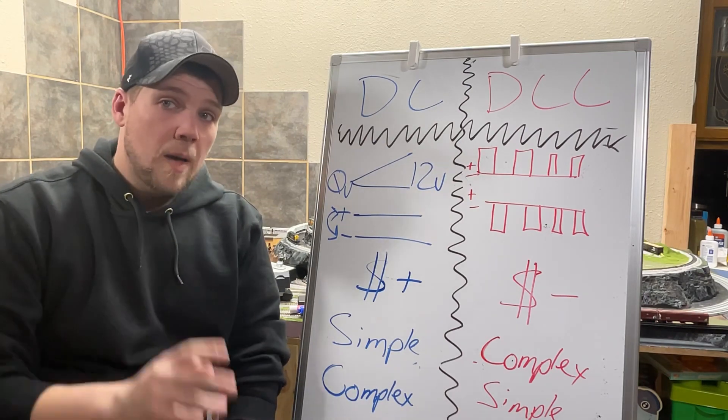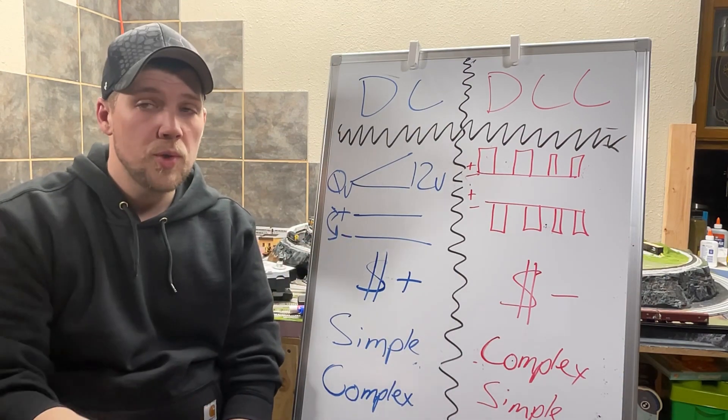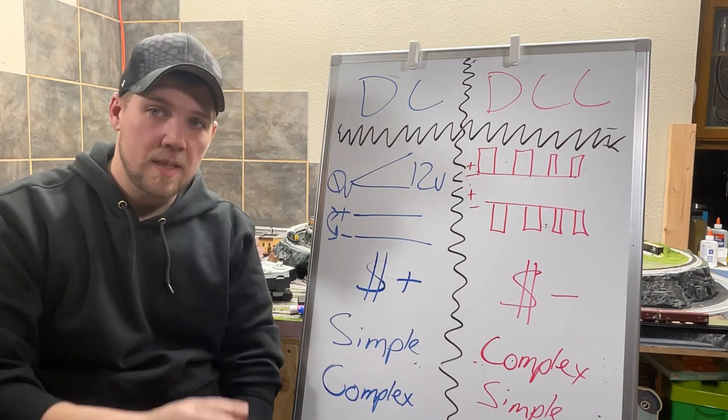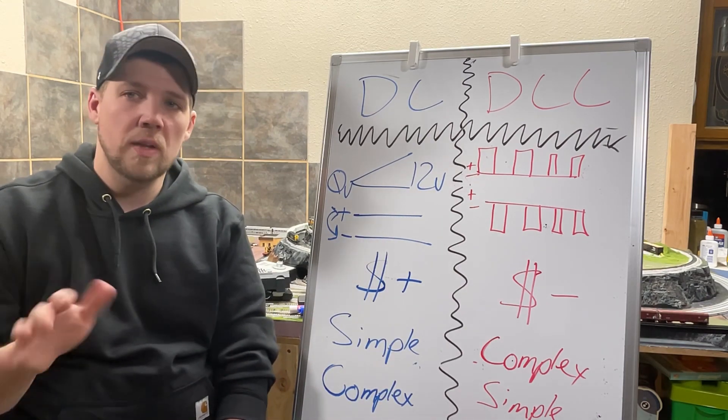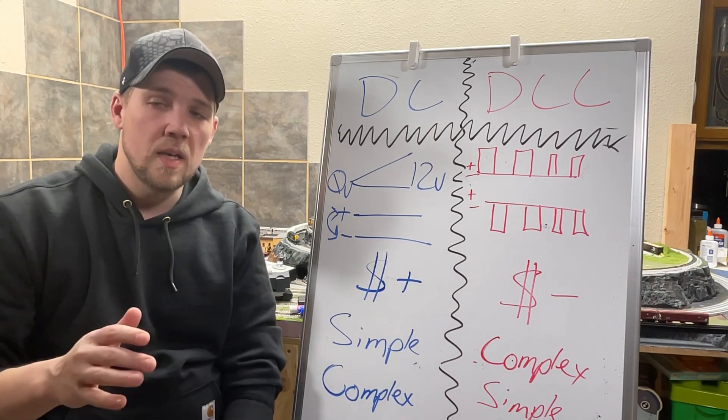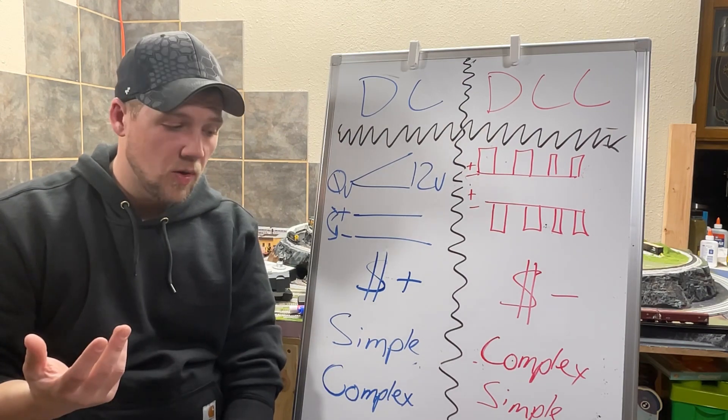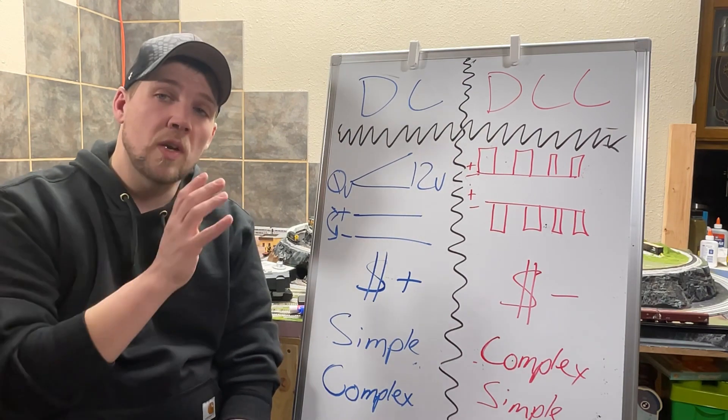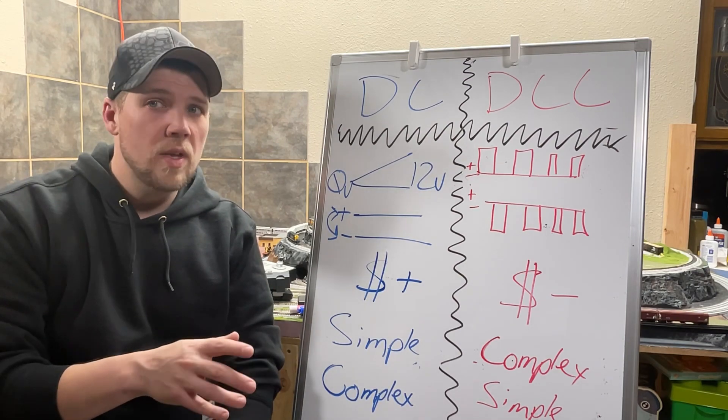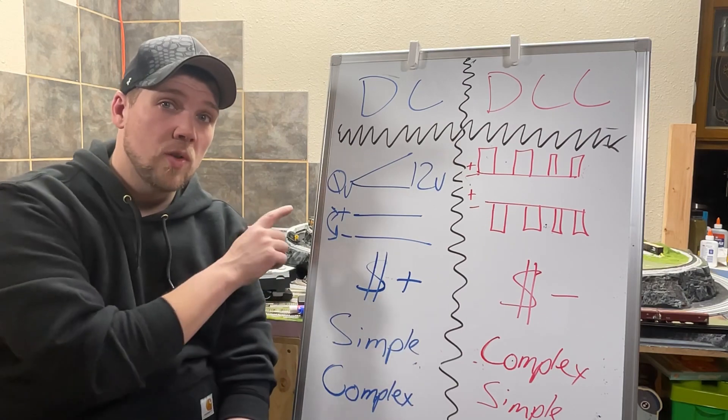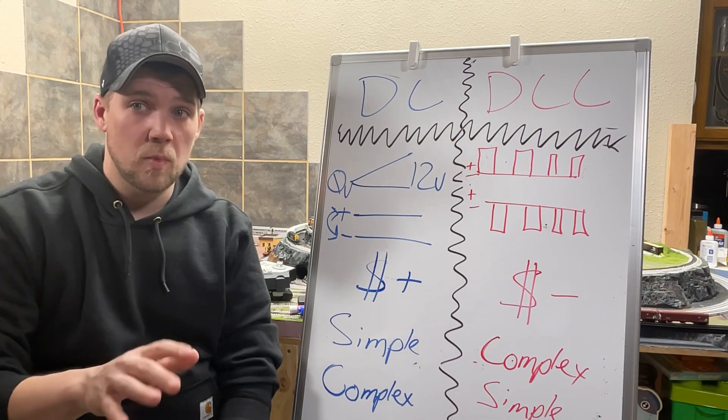There are currently three options available. There is DC, DCC, and there's also some Bluetooth stuff coming to market. We're going to bypass the Bluetooth stuff for today, mainly because it's relatively new, and I don't think the technology is quite there yet. It has been around for the larger scale locomotives for a while now. We're starting to get it in the smaller scales. I don't have any experience with it, and I don't think you can do a whole lot of the extra stuff that you can do like in a DCC system in the Bluetooth ecosystem quite yet.